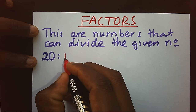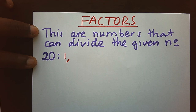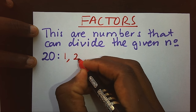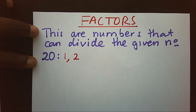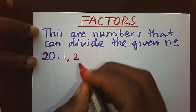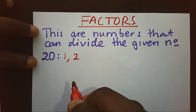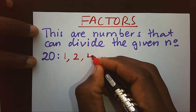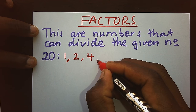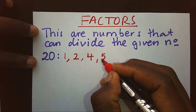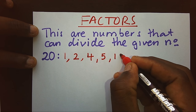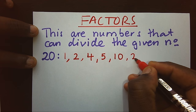1 can divide 20 because 20 divided by 1, you'll get 20. 2 can divide 20 because 20 divided by 2, you'll get 10. 3 cannot properly divide 20, hence we shall skip it. 4 can divide 20 and we shall get 5. And the opposite is true — 5 can divide 20 to get 4, and we shall also have 10 and 20.